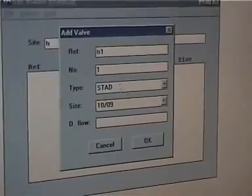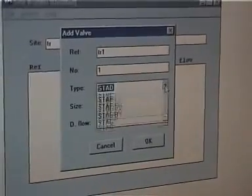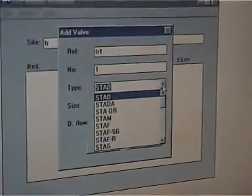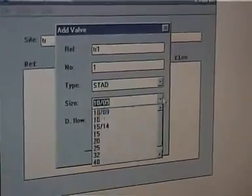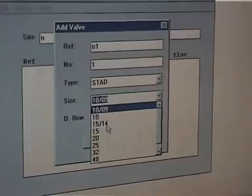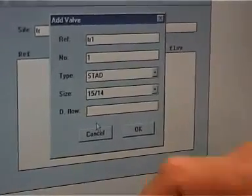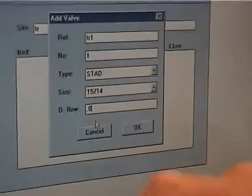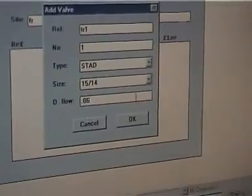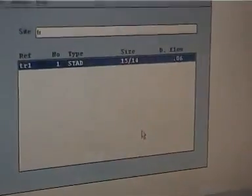We know the type of valve is a STAD. If we didn't and we needed to change the valve at that time, these are the other options we've got. The size of the valve on this installation is a 15-14, and then we type in our required flow rate. Once done that, we hit the OK button, puts it up on the screen.